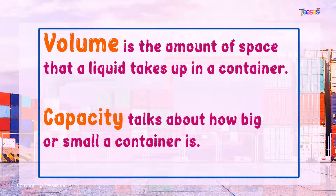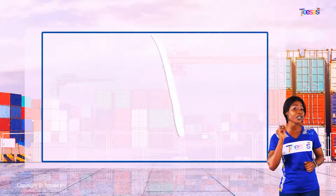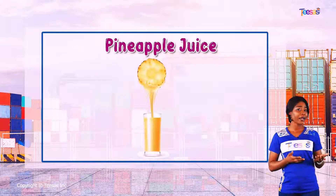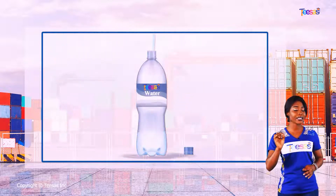Volume is the amount of space that a liquid takes up in a container, while capacity talks about how big or small a container is. Interestingly, we can measure liquids like water, pineapple juice, and oil when they're poured into containers.